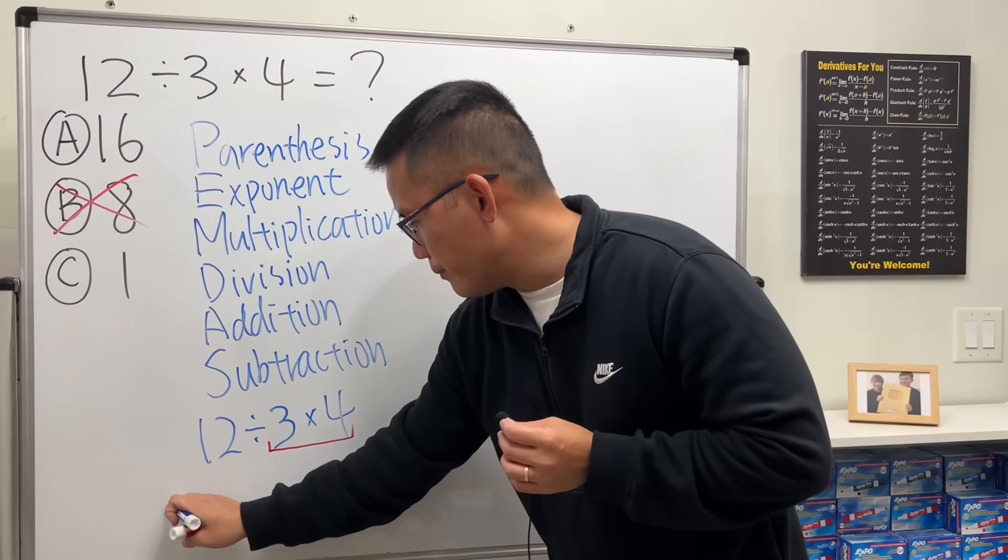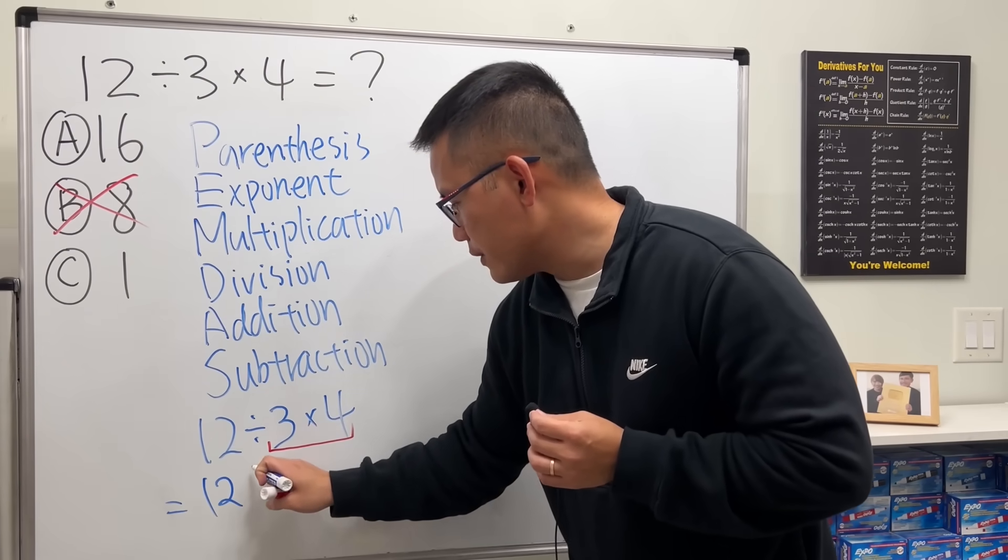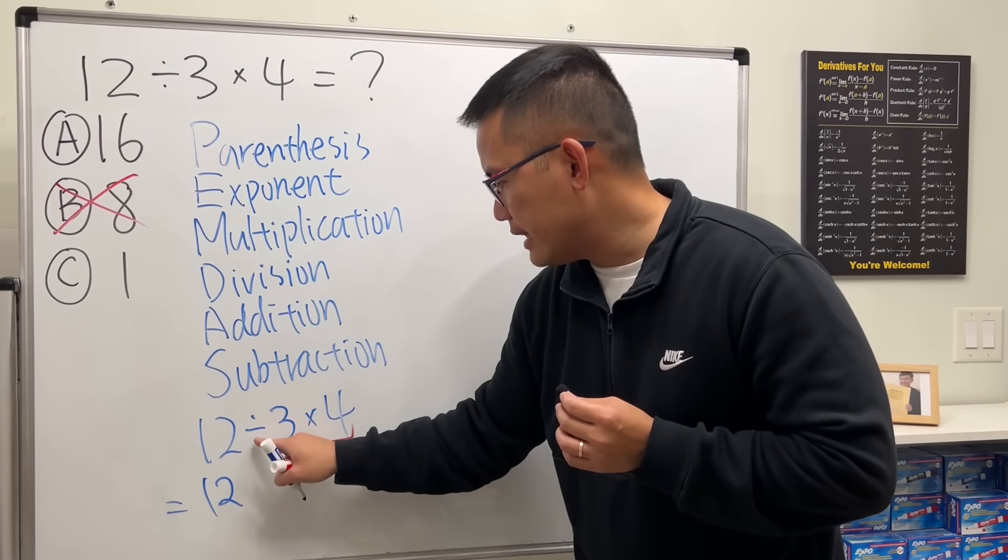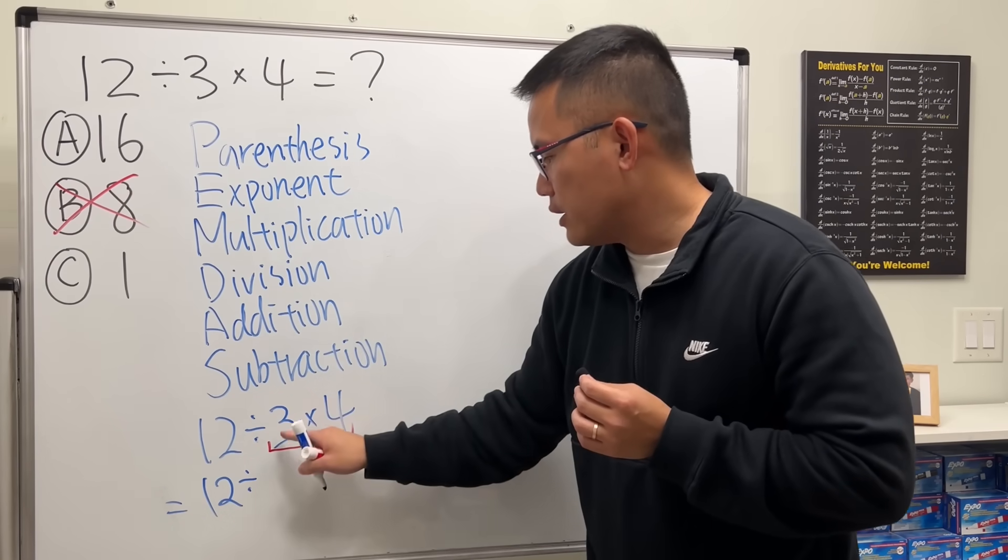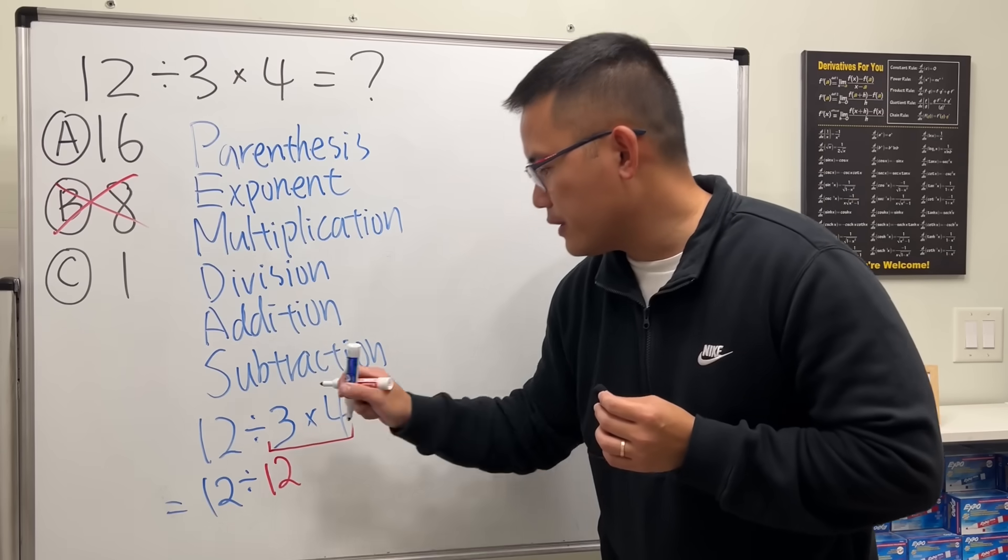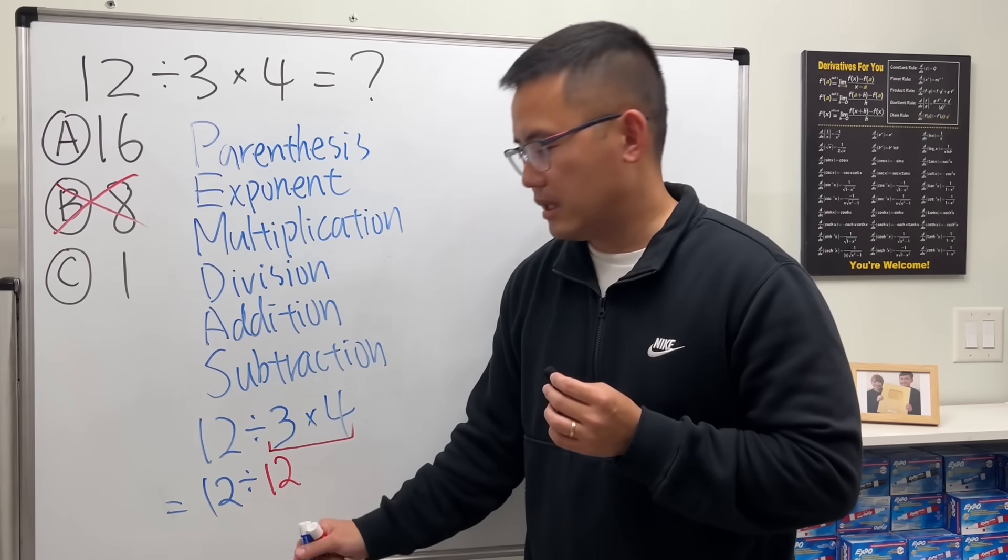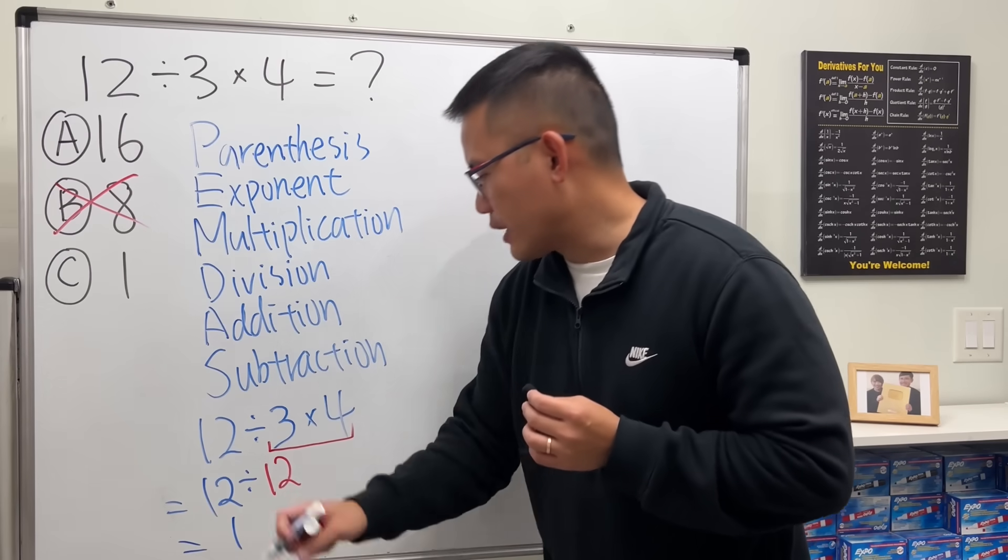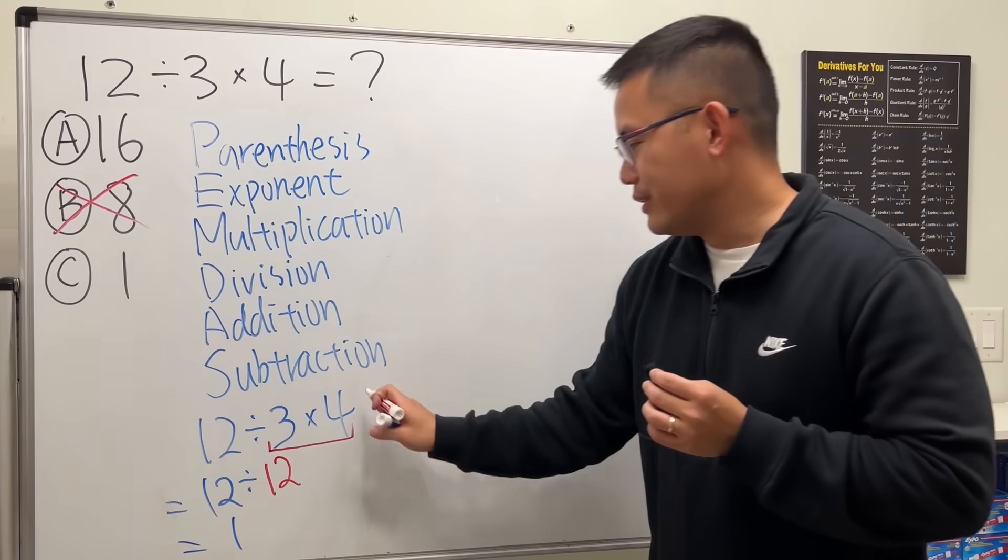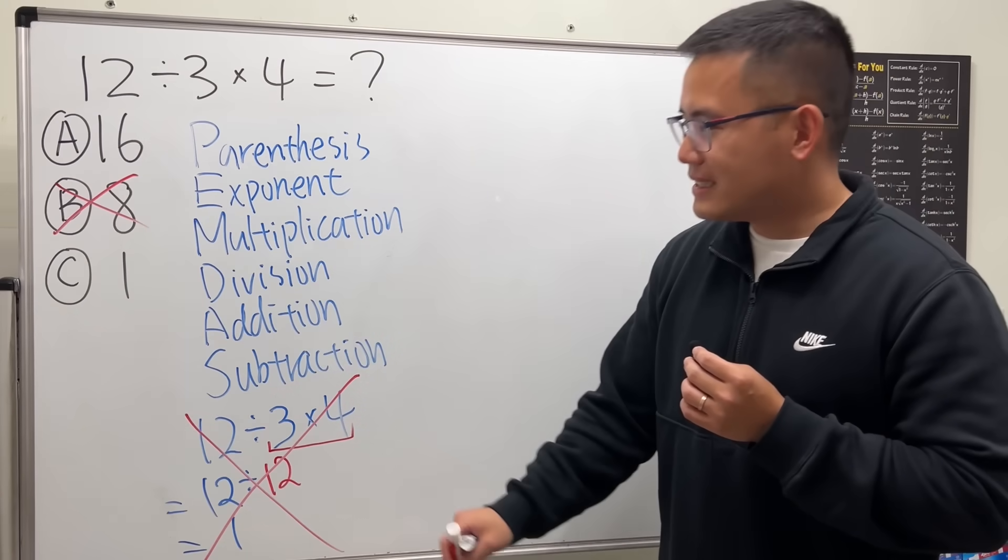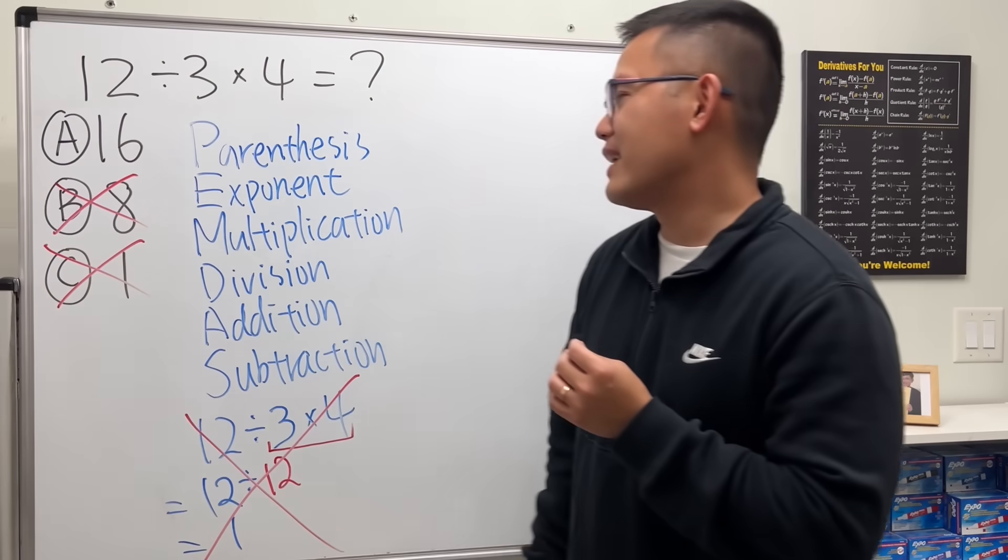3 times 4, okay that's 12, so we write down this 12 and then write down this division. 3 times 4 is 12, and then next we just have to do 12 divided by 12. So it looks okay right?